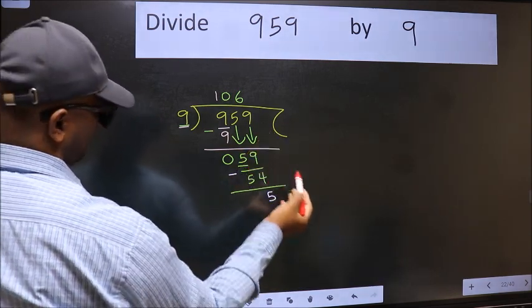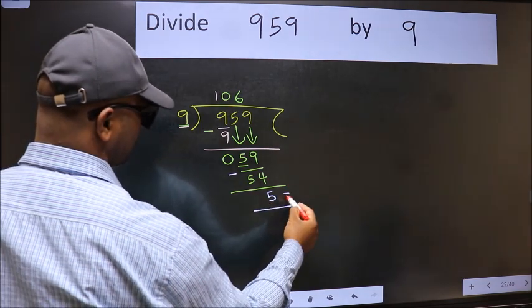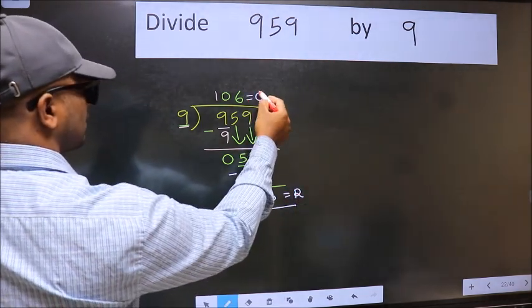No more numbers to bring down, so we stop here. This is our remainder and this is our quotient.